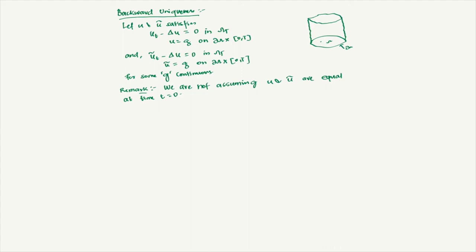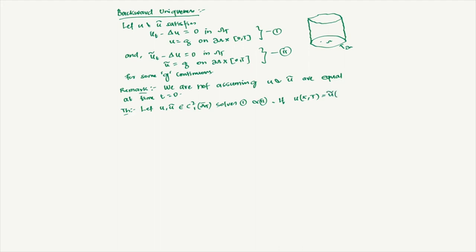Now, what does backward uniqueness say? The theorem says: let u and u-tilde be in C^{2,1}(omega_T bar), and suppose they solve equations (1) and (2). If u(x,T) equals u-tilde(x,T) for all x in omega — that is, they are the same at some time T — then we can conclude they are equal throughout.